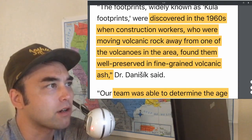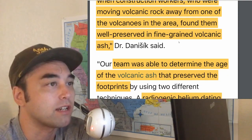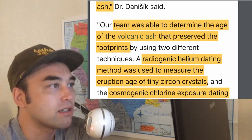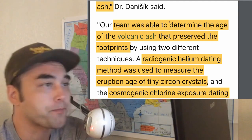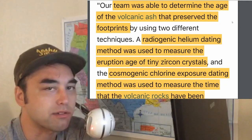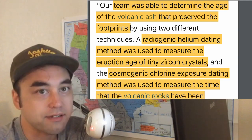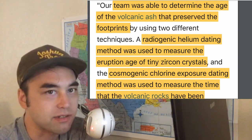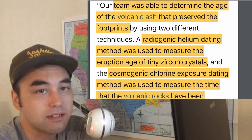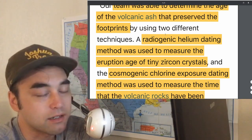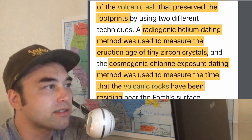Just a little background: the Kula footprints were found in the 1960s by construction workers who were moving volcanic rock away from volcanoes in the area, and the footprints were in volcanic ash. The recent researchers first determined the age of the volcanic ash that preserved the footprint. If there was concrete and someone stepped on it, and thousands of years later they had a method of dating that concrete, they could determine when that footprint was imprinted — they won't get the exact date, but they'll have a ballpark. That's exactly what happened here with the volcanic ash, using two different techniques.